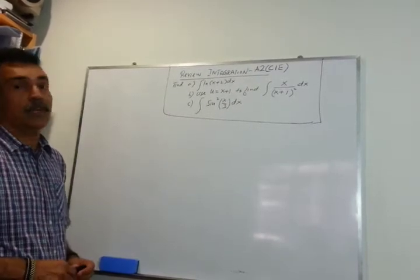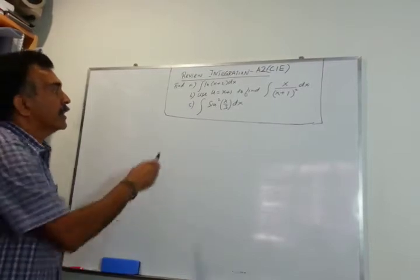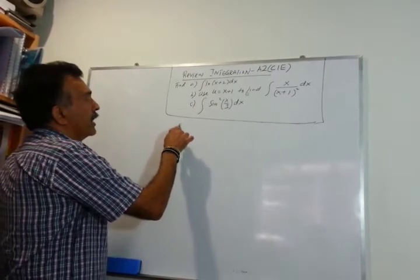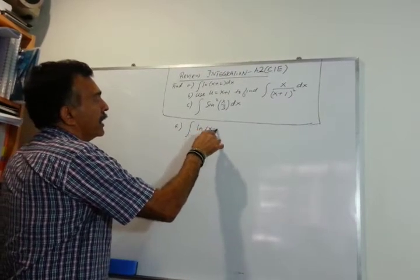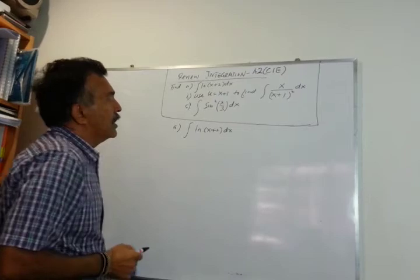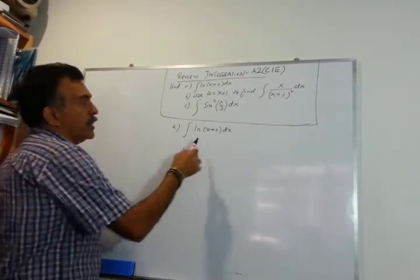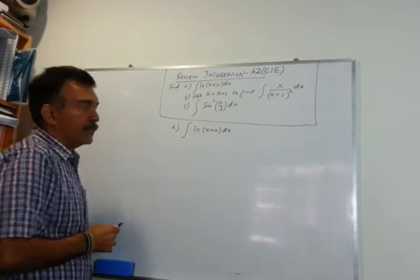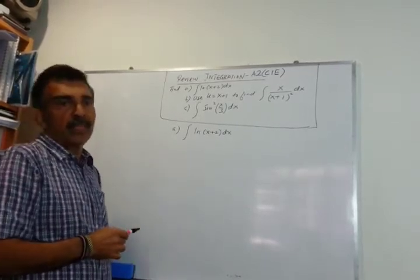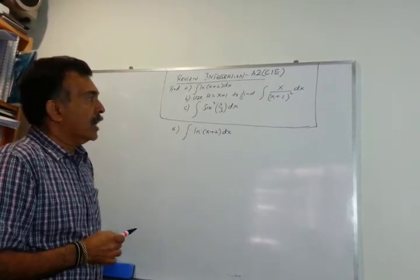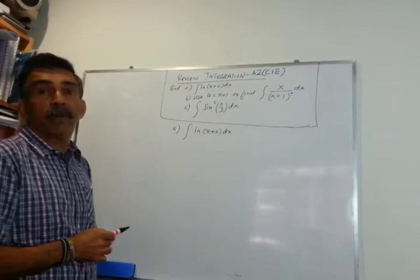Let's start with the first integral. In part A we have to find the integral of ln(x+2). This is log of (x+2) to base e, and we will integrate this with respect to x. The technique we are using is integration by parts.